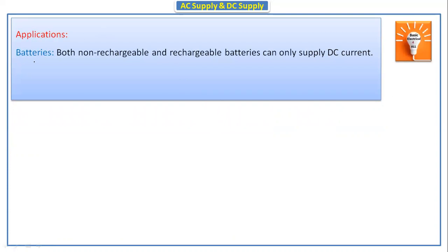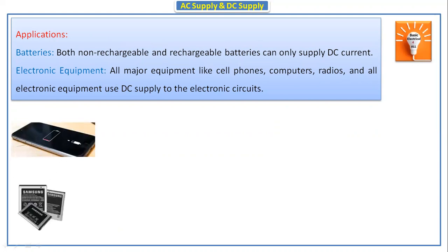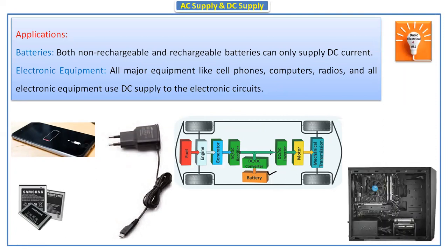The applications of DC include batteries — both non-rechargeable and rechargeable batteries can only supply DC current. Electronic equipment such as cell phones, computers, and radios all use DC supply to their electronic circuits. In mobile phones, we require DC supply to charge the battery. In electric vehicles, we also use DC supply because the battery takes only DC. In computers, CPUs also use DC supply only.